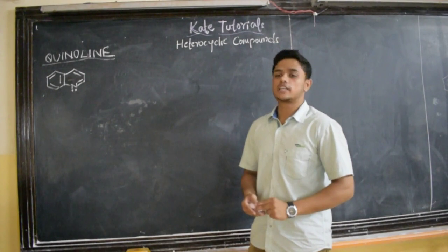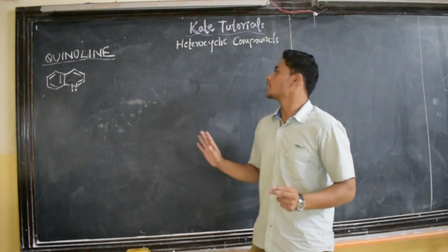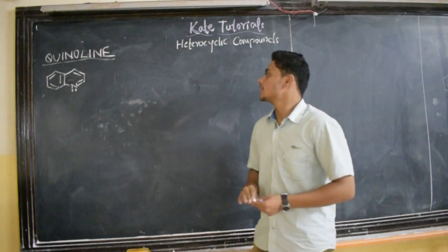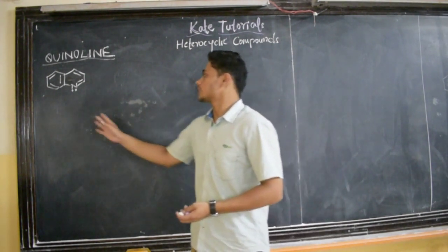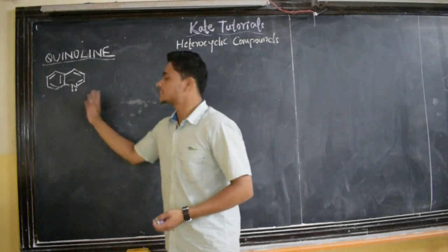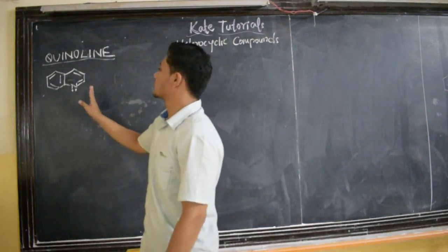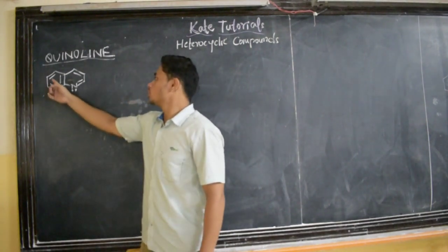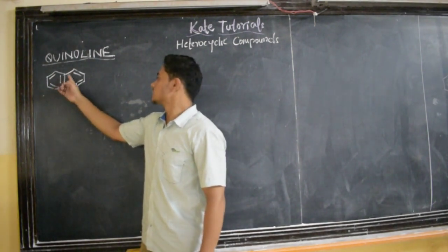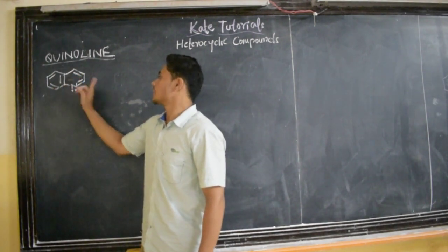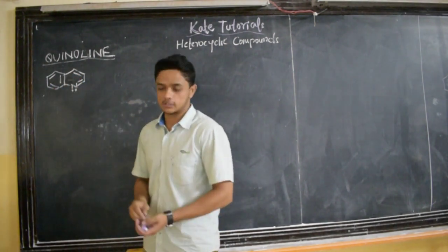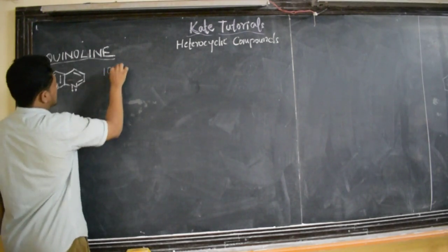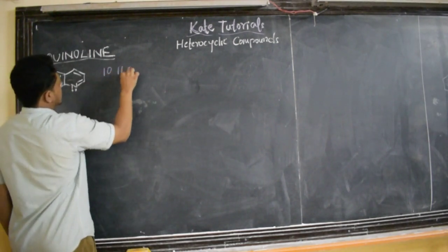In this class, we shall directly discuss about the structure of Quinoline. The structure of Quinoline is like this. We count the number of pi electrons: 2, 4, 6, 8, 10. So it has got 10 pi electrons.